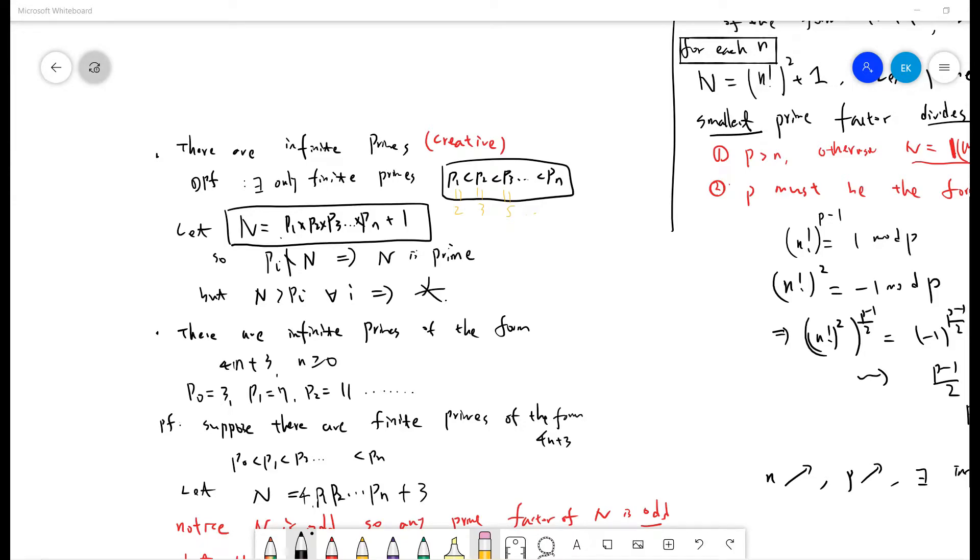Okay, welcome guys. So in this video, I want to talk about some classical ways to prove there are infinite primes, there are infinite primes of the form 4n plus 1, and there are infinite primes of the form 4n minus 1. This is my own note. Let's quickly review the first case.